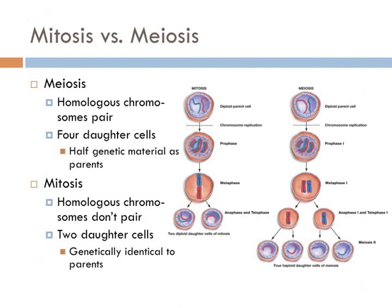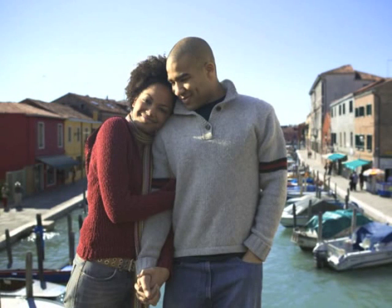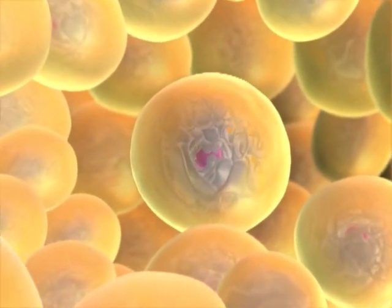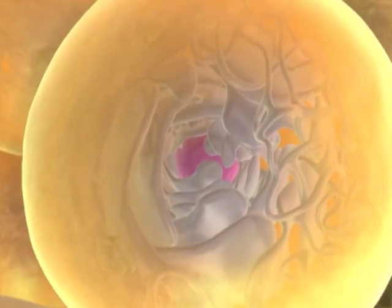Mitosis and meiosis are very similar but also distinctly different. In meiosis, homologous chromosomes pair to form tetrads — this doesn't happen in mitosis. Meiosis forms four daughter cells that have half as much genetic information as the parents and are haploid, whereas mitosis produces two daughter cells that are genetically identical to the parent cells and are diploid. Humans produce gametes — eggs and sperm — through the process of meiosis, and we'll follow the production of male gametes by focusing on a single cell as it goes through meiosis.